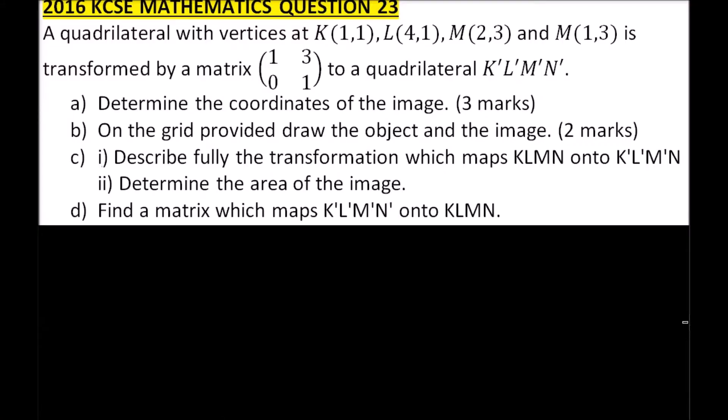Question number 23. We are told a quadrilateral with vertices K(1,1), L(4,1), M(2,3), and N(1,3) is transformed by matrix [1,3;0,1] to a quadrilateral K'L'M'N'. We need to determine the coordinates of the image.